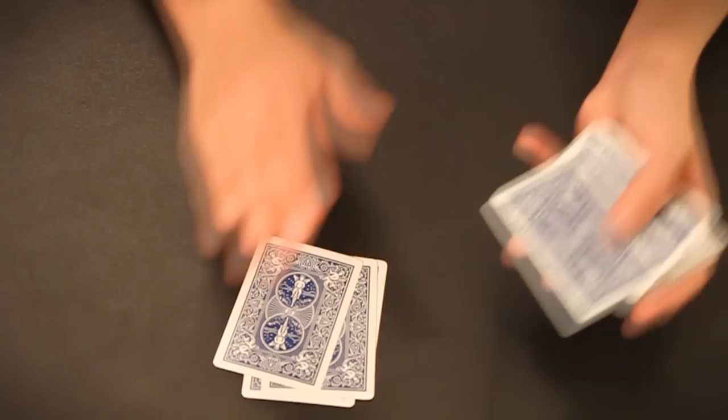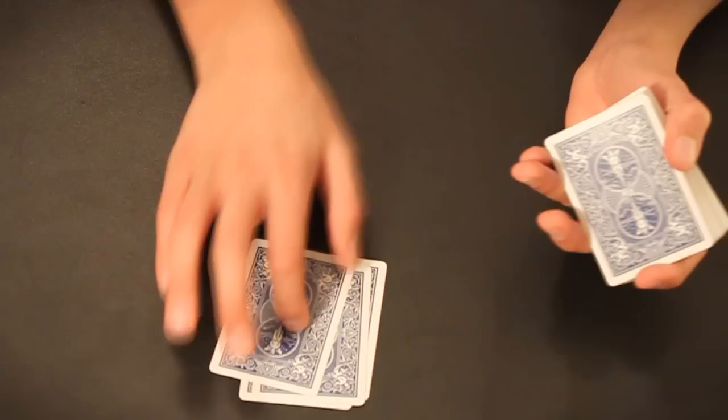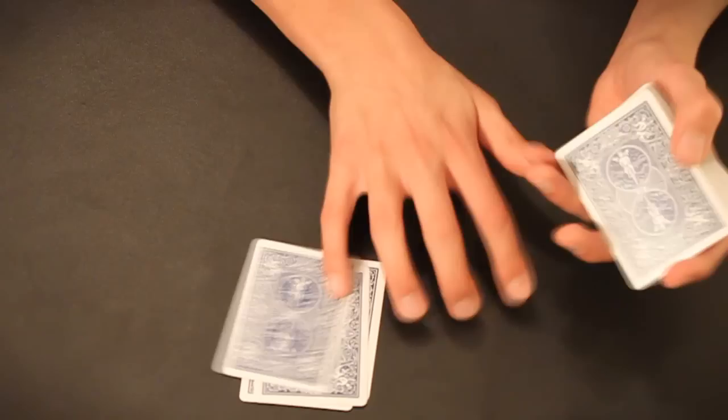You're going to ask the audience to either say left or right and you're going to deal the cards into those parts. But what you need to do is count out 26 cards for the first two piles to ensure that you get exactly half your deck into these two piles.